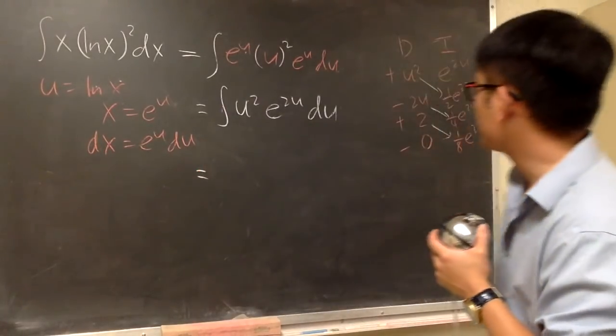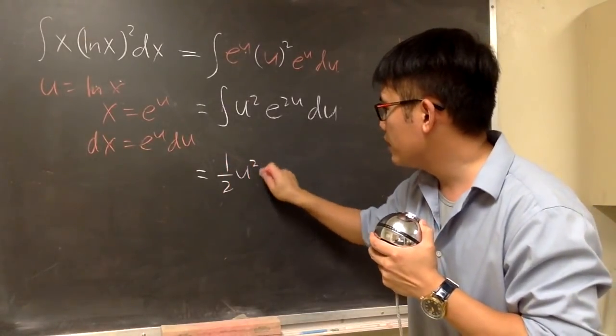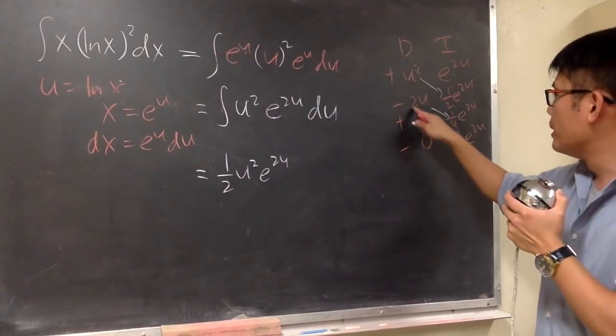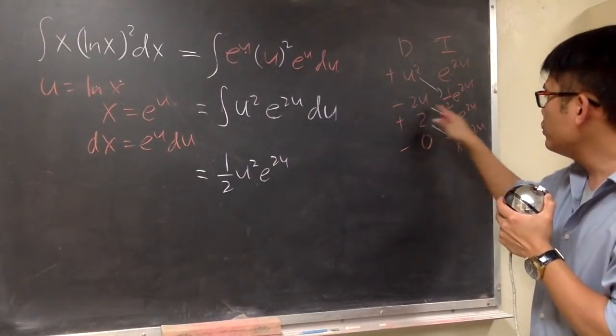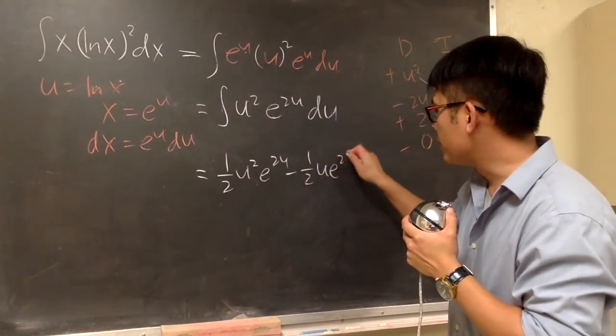First, this is what we're going to have. Positive u squared times 1 half this. So we get 1 half u squared e to the 2u. And then this is negative 2u. So be sure you have the negative right here. And 2 times 1 over 4 is 1 half. And that's minus. So that's minus 1 half u e to the 2u.